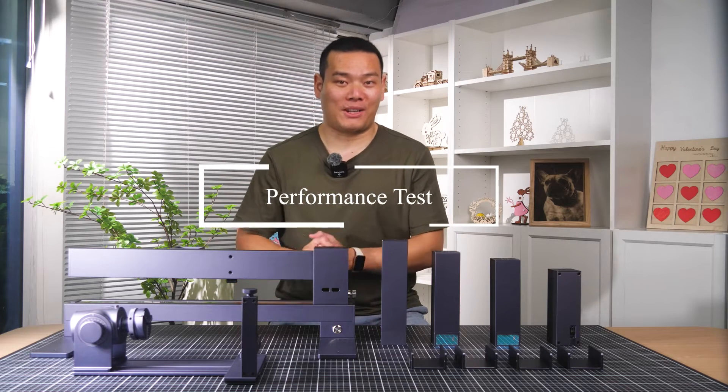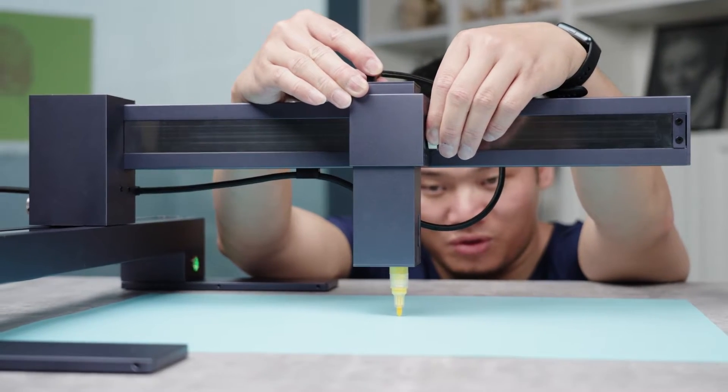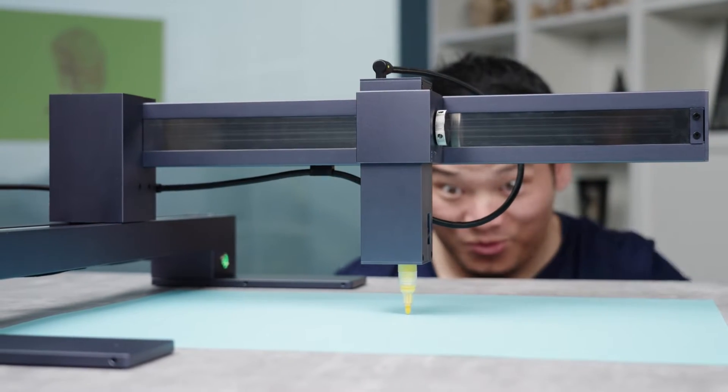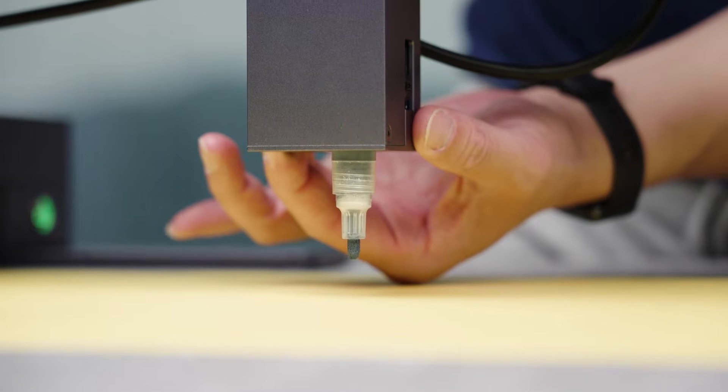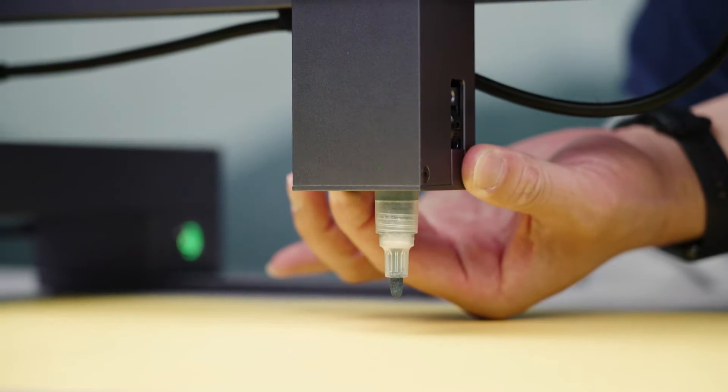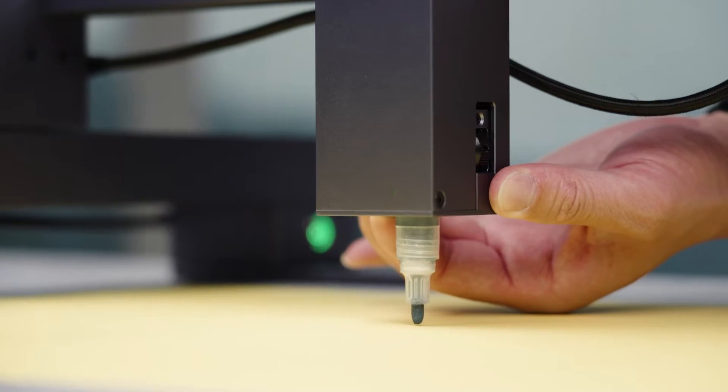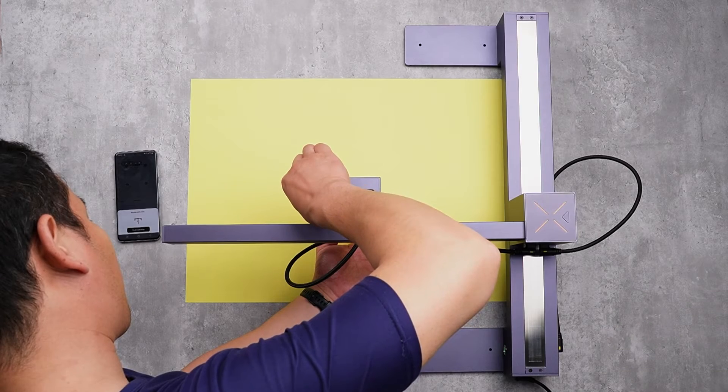Let's move on to the performance tests. I want to start off with something new, which is the drawing. So here's how it works: first you pop the pen into the module, and adjust the head to let it just touch the surface of the material you want to draw, and then fix the module.